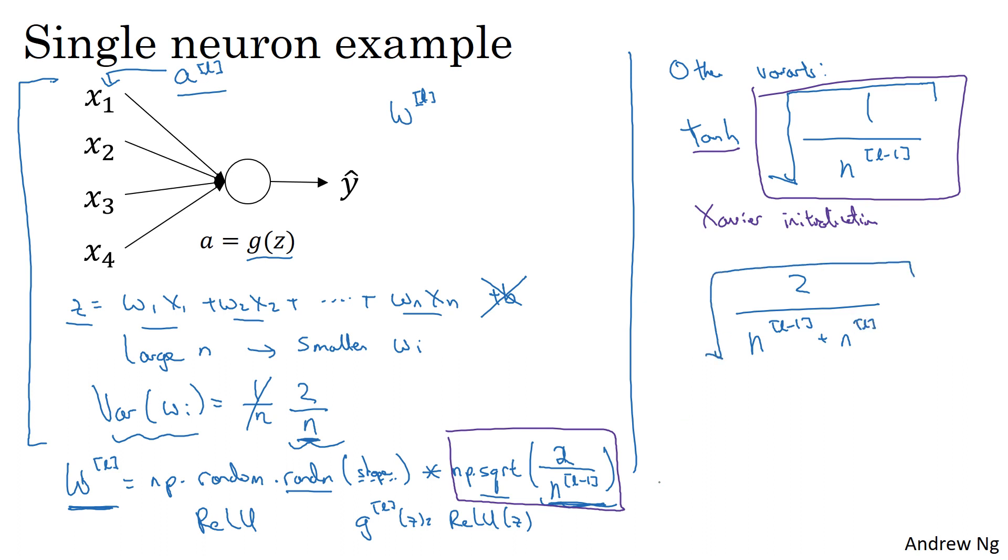But I would say if you're using a ReLU activation function, which is really the most common activation function, I would use this formula. If you're using tanh, you could try this version instead, and some authors will also use this. But in practice, I think all of these formulas just give you a starting point. It gives you a default value to use for the variance of the initialization of your weight matrices.